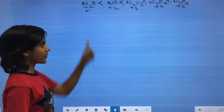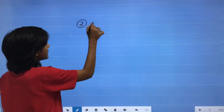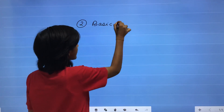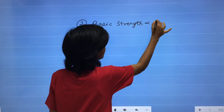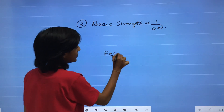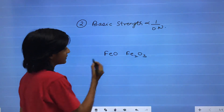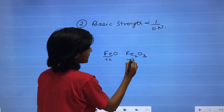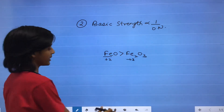Second, we discuss basic strength. Basic strength is inversely proportional to the oxidation number. For example, if we compare FeO and Fe2O3, the oxidation state of Fe is +2 and +3 respectively. So FeO is more basic than Fe2O3.